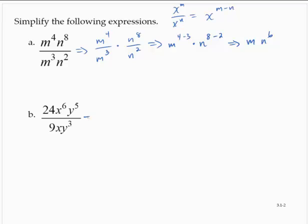Similarly, for the second exercise, I can think of this as 24 over 9 times x to the sixth over x times y to the fifth over y to the third.